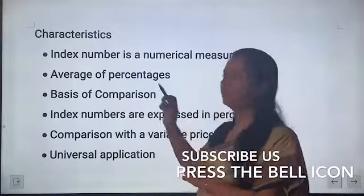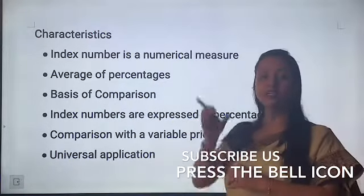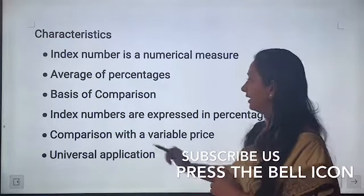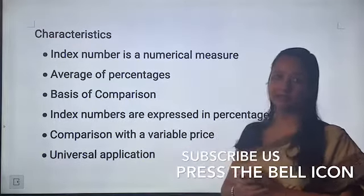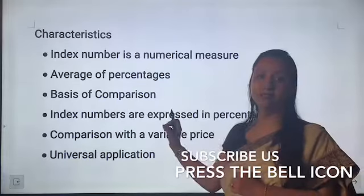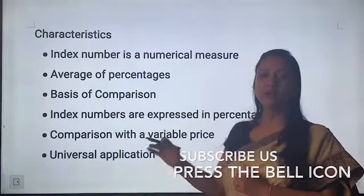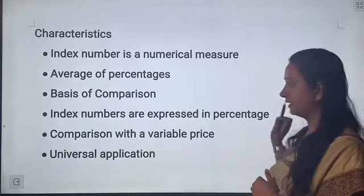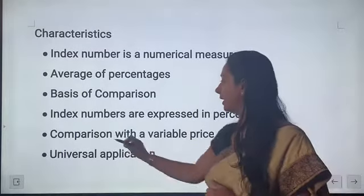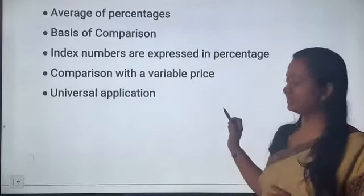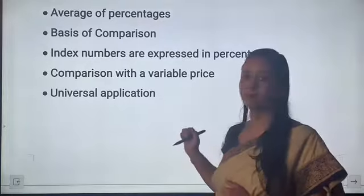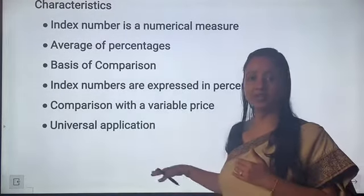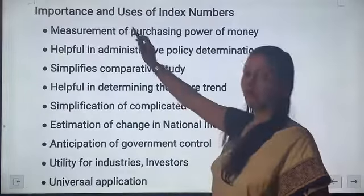Next characteristic is average of percentage — yeh poori commodities ke as an average of percentage use kiya jata hai. Basis of comparison: this is the best basis — different years mein aap comparison karenge. Index numbers are expressed in percentage comparison with a variable price. Next is universal application — yeh social, economic, or commercial sabhi jagah applicable hota hai.